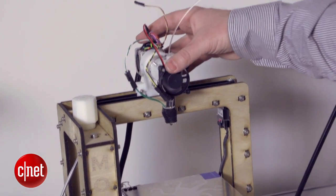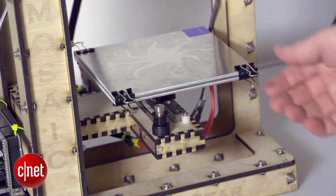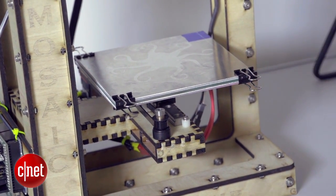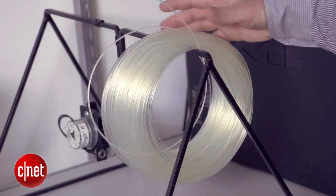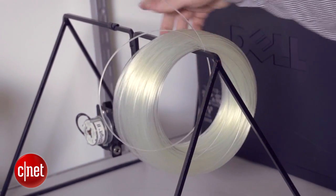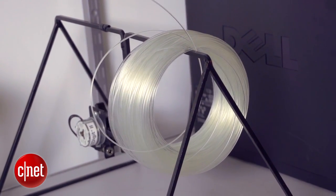You can sort of see the setup here. We've got the printer. There's the build plate that travels up and down when we want to get a print. We've got our spool of filament hooked up here. It's kind of jerry-rigged but it gets the job done.